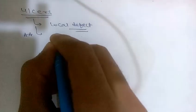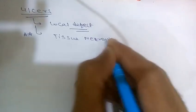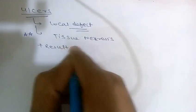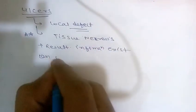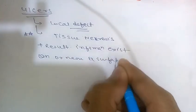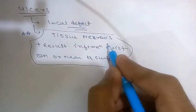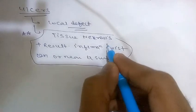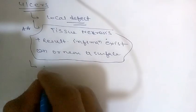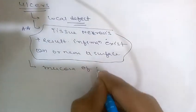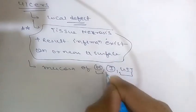Ulceration can occur only when tissue necrosis and resultant inflammation exist on or near a surface. Ulcers are most commonly encountered in the mucosa of the mouth, GI tract, and adjacent structures.